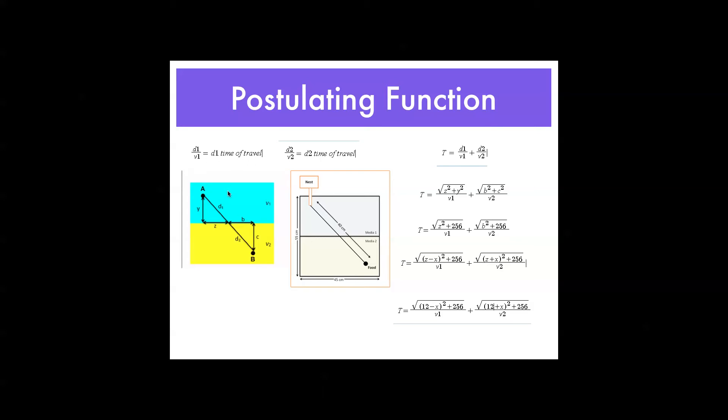So, if you have distance 1, this distance, this segment, over v1, you get the time of travel for this segment. Same thing for this part. So, adding those together gives you the overall time of travel.